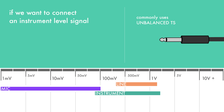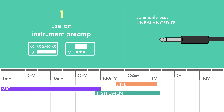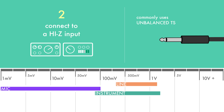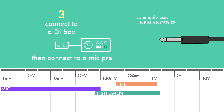If we want to connect an instrument level signal to a line level input, we have three choices. One is to use a dedicated instrument preamp, such as the many analog and digital guitar and bass preamps in rack and pedal format. Another is to connect it to a Hi-Z input on a mic preamp, found in most audio interfaces and professional mic preamps. The third way is to connect it to a DI box, which will transform the signal to a low impedance microphone level signal, which we can connect directly to a mic preamp, as if it were a microphone.